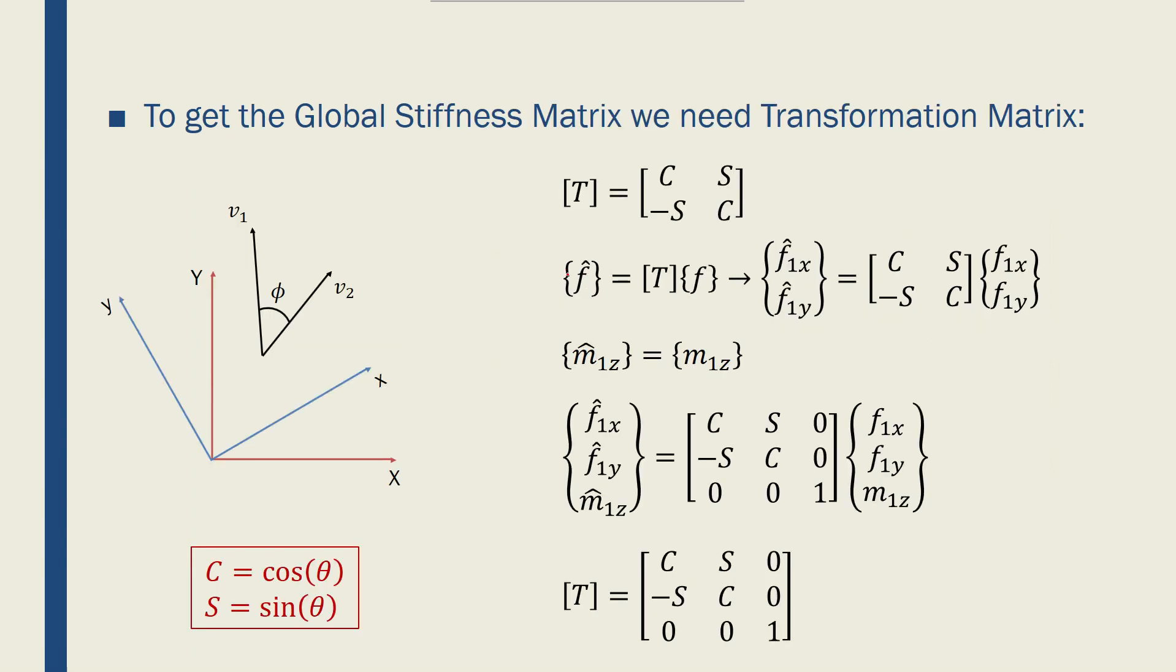Now to move from the local SFS matrix to global SFS matrix, we need to use a transformation matrix. For 2D in truss analysis, we found this transformation matrix: cosine, sine, minus sine, cosine, that would relate the local forces to global forces. Similarly for local displacements to global displacements.